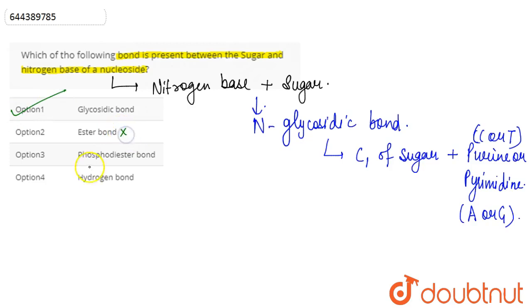Ester bond is not formed, so this is wrong. Then phosphodiester bond is wrong and hydrogen bond is also wrong. So we can say that option one is our correct answer here.